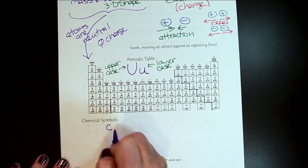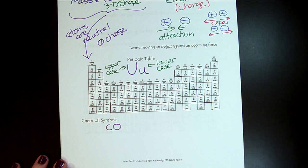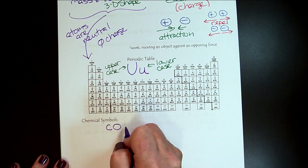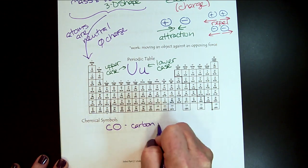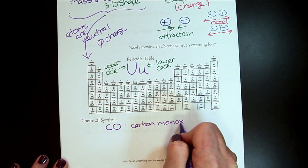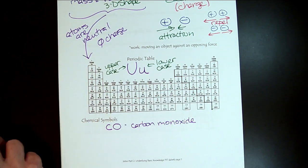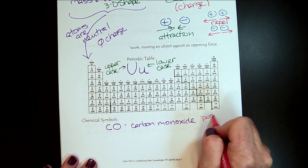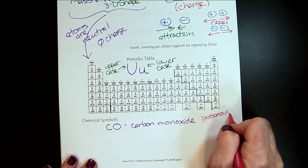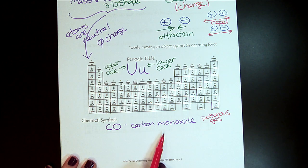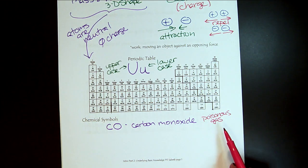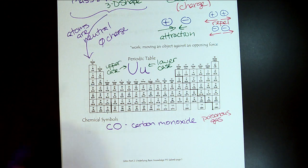If we have an uppercase C and an uppercase O, many of you probably know what that is. That's carbon monoxide. What do you know about carbon monoxide? It's a poisonous gas. People kill themselves with it. The interesting thing about carbon monoxide is when people die from it, they look amazing. They look like they just went to the beach. By blocking the oxygen metabolism in our body, it turns our skin kind of a light red.